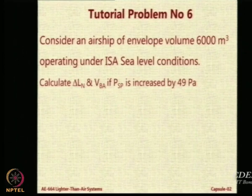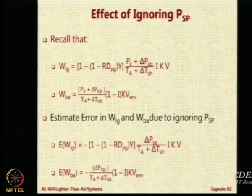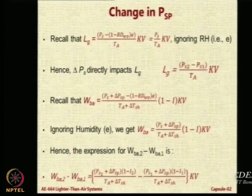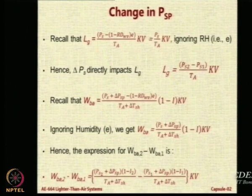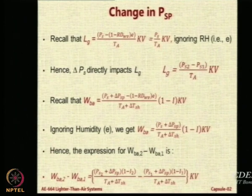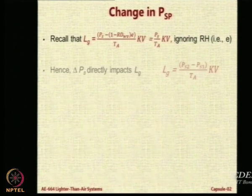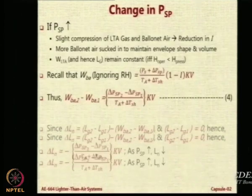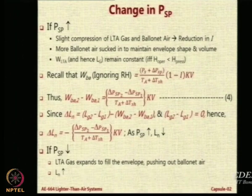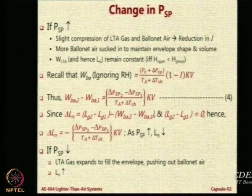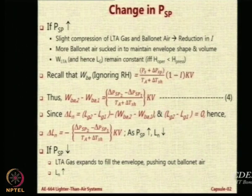Using the same expression you will be able to get these two numbers. For your ease I will show you the expressions so that you can use them. Delta LN will be equal to minus of (delta PSP2 minus delta PSP1) divided by (TA plus delta TSH) into K into V.